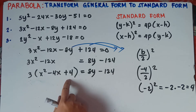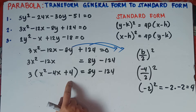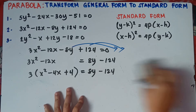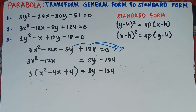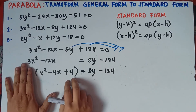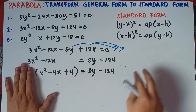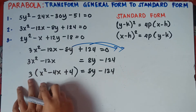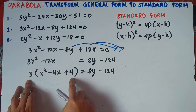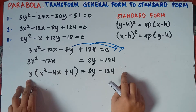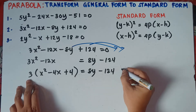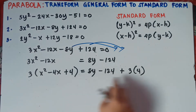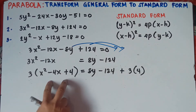Be careful here, class. In a simpler equation without a factored coefficient, you just add 4 to both sides directly. But since we factored out 3, you cannot add 4 directly to the right side. Instead, you must multiply 3 × 4, and that product is what you add to the right side. So you will add +3 × 4, not just +4. Always remember this when a common factor has been pulled out.